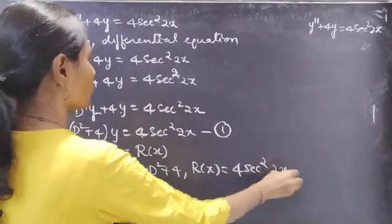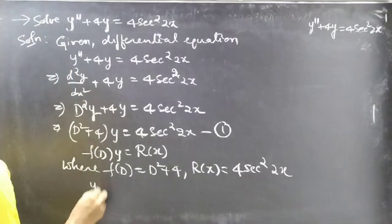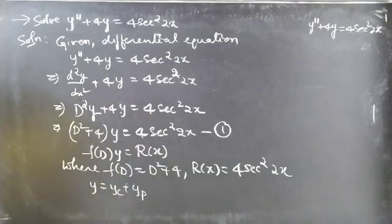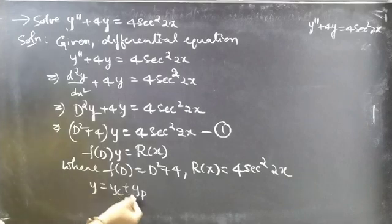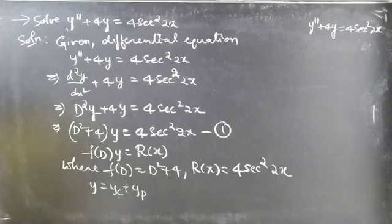Here f of D equals D squared plus four, and R of x is four sec squared 2x. We'll find the general solution using y equal to yc plus yp, where yc is the complementary function obtained from the auxiliary equation, and yp is obtained using a separate formula from yc. Let's begin with the auxiliary equation.